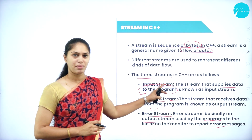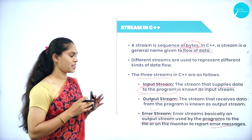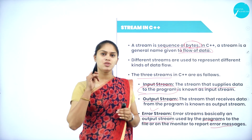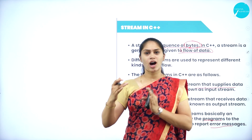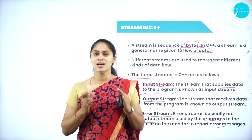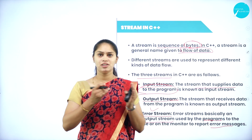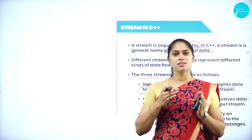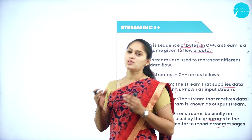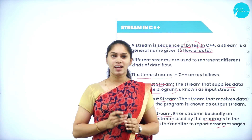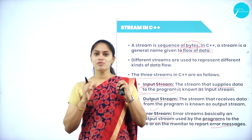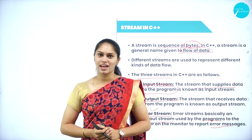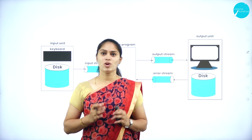These concepts — stream types and their definitions — are important for two-mark and three-mark questions, so you have to be very conscious. Error streams are mainly used to display error messages on the screen. The errors occur in the C++ program and are displayed on the console — so error stream, which is fetching data from program to output unit, also comes under the output stream.